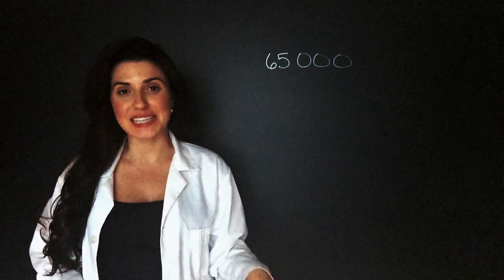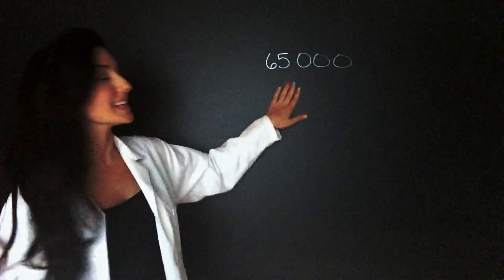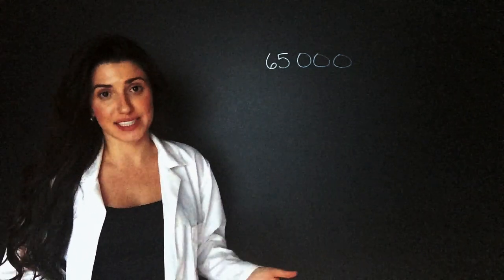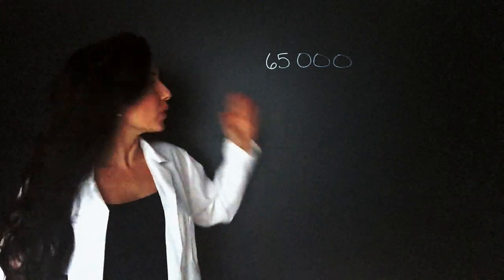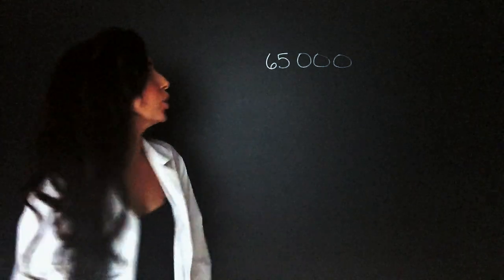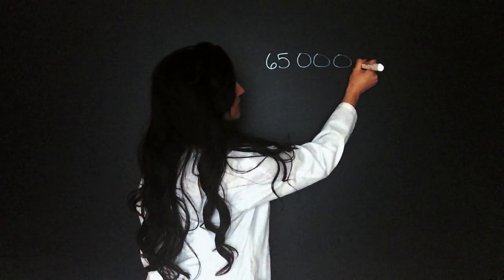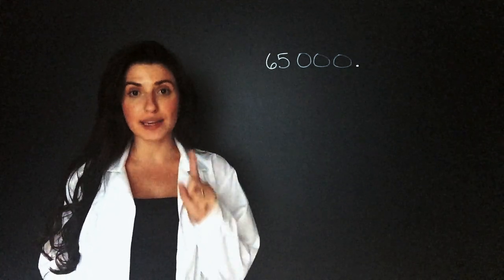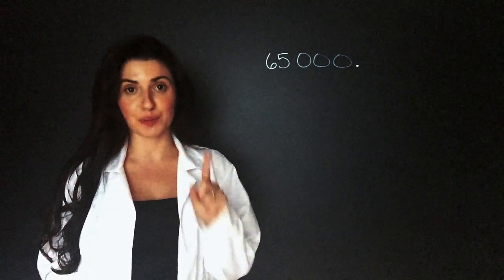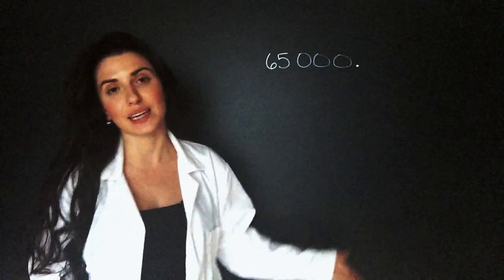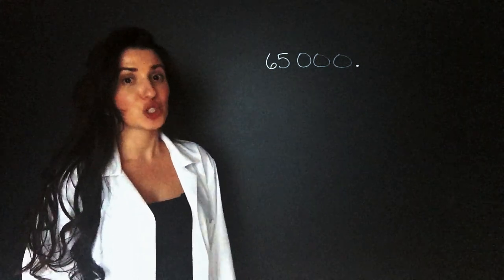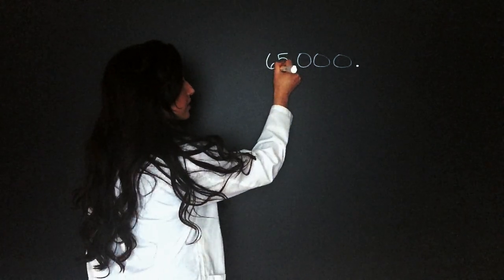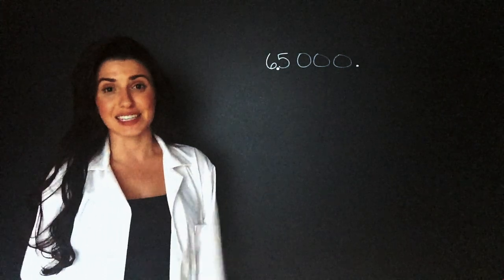My first example is a pretty simple one: 65,000. The first thing we have to do is find where the decimal is. When there's no decimal in the number, we know that it's at the end. In scientific notation, we have one number before the decimal and then as many numbers as we need after it. So we need to move the decimal so that it's 6.5.